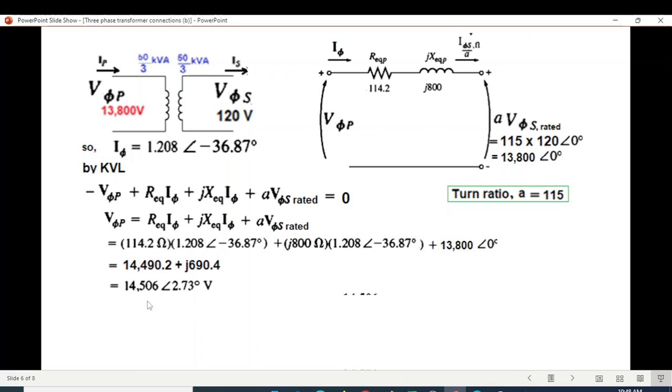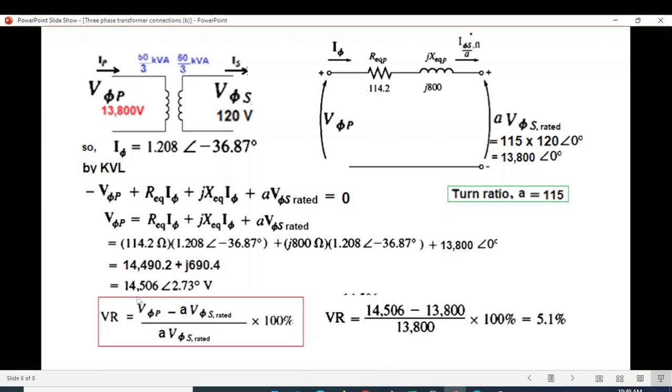Solve and we get V phase P, or the primary phase voltage, is 14,506. So now voltage regulation: we use this formula. V phase P we calculated. A V S full load we calculated. So I will write this equation: 14,506, we take magnitude, minus 13,800 divided by 13,800. So VR or voltage regulation of this transformer is 5.1%. So that is the second part.